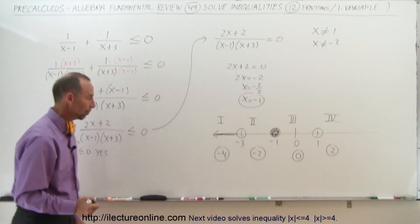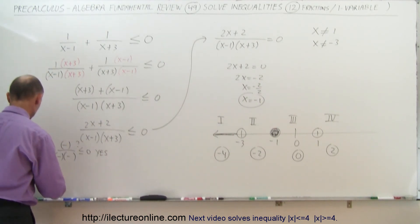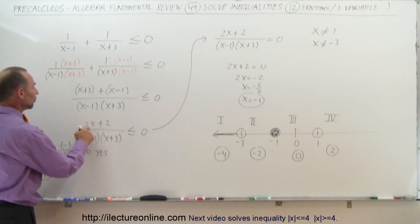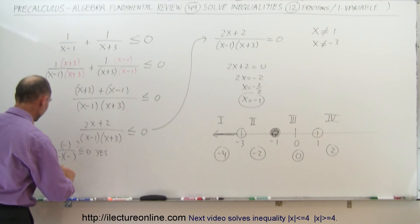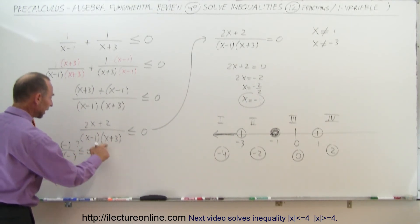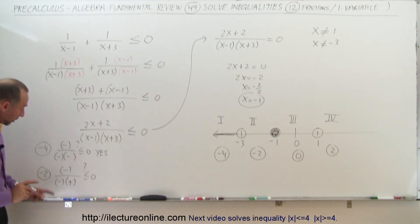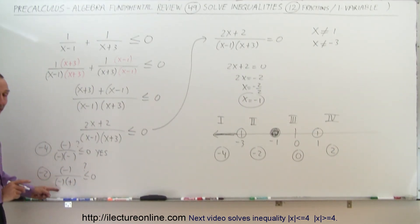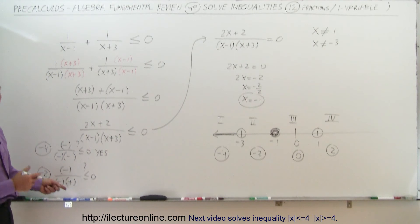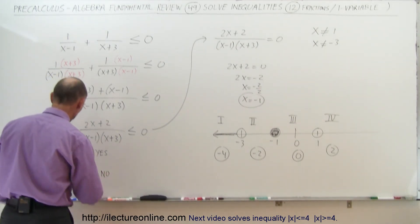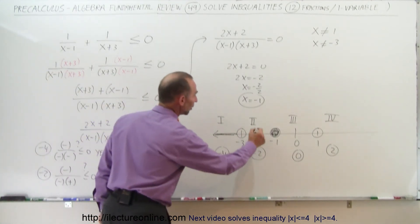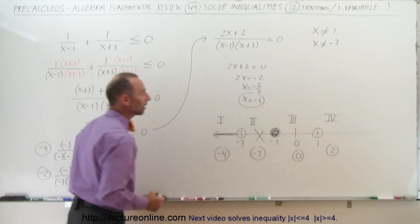For the next test point, negative 2 from region 2: 2 times negative 2 is negative 4, plus 2 gives a negative number in the numerator. Negative 2 minus 1 is still negative in the denominator, and negative 2 plus 3 is positive. A negative divided by a negative is positive, divided by positive is still positive — that cannot be less than 0. The answer is no; region 2 does not satisfy the inequality.